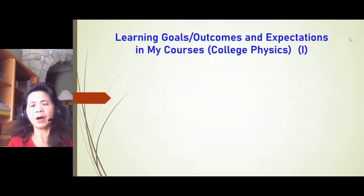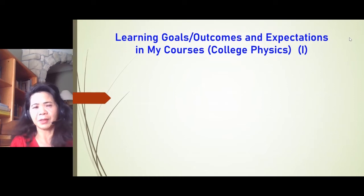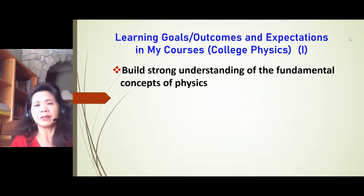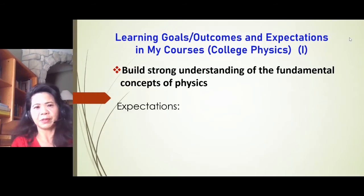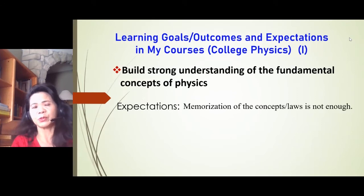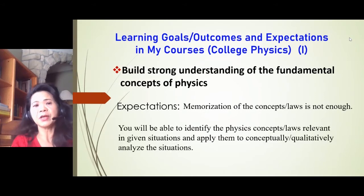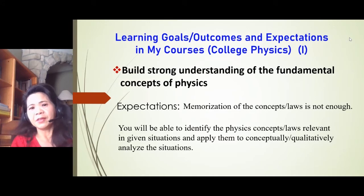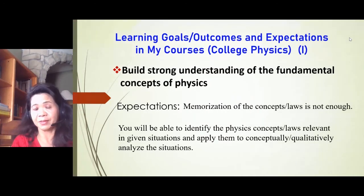Let me show how I set up learning outcomes and clarify student expectations. The first learning outcome is to build strong understanding of fundamental physics concepts. I point out to students that understanding doesn't mean just memorizing laws and concepts. What I expect is that students will be able to identify the physics concepts and laws relevant to given situations, and apply them to conceptually or qualitatively analyze those situations — that is the level of understanding and analysis.